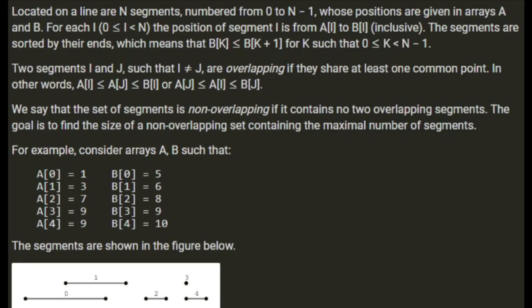Located on a line are n segments numbered from 0 to n-1, whose positions are given in arrays a and b. For each 0 ≤ i < n, the position of segment i is from a[i] to b[i] inclusive. The segments are sorted by their ends, meaning b[k] ≤ b[k+1] for k such that 0 ≤ k < n-1. Two segments i and j are overlapping if they share at least one common point — that is, a[i] ≤ a[j] ≤ b[i] or a[j] ≤ a[i] ≤ b[j]. A set of segments is non-overlapping if it contains no two overlapping segments.